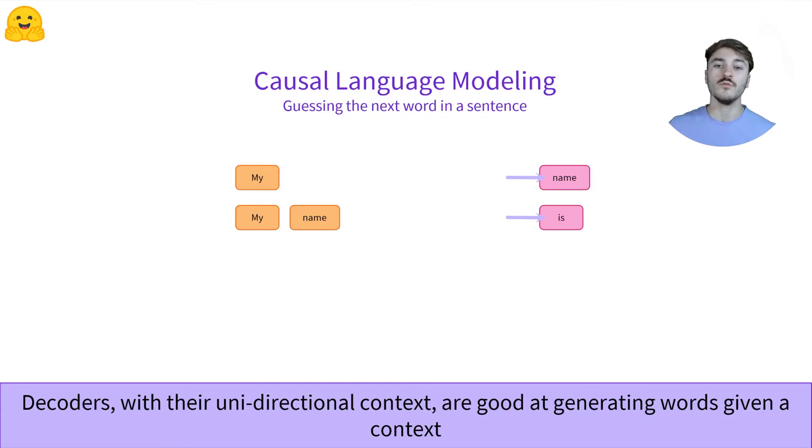Autoregressive models reuse their past outputs as inputs in the following steps. Once again, we do the exact same operation. We cast that sequence through the decoder and retrieve the most probable following word.